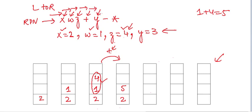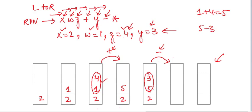Moving further right, we encounter Y with value 3, so we push 3 onto the stack. Then we encounter the minus operator, so we remove the top two values. Remember: it is always the bottom value first, then the operator, then the top value — so it is 5 minus 3, not 3 minus 5. That equals 2, which we push back.